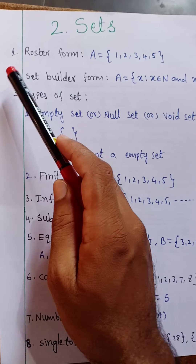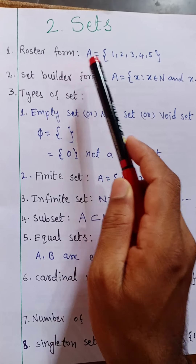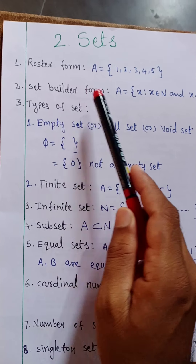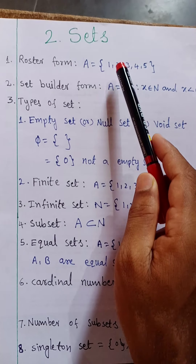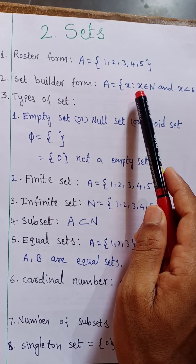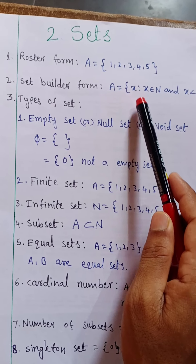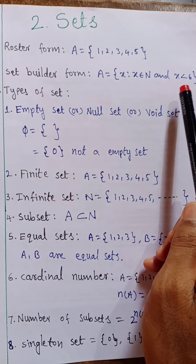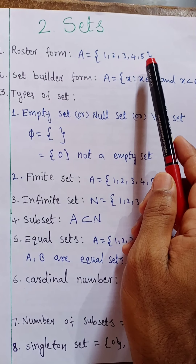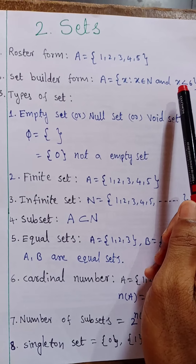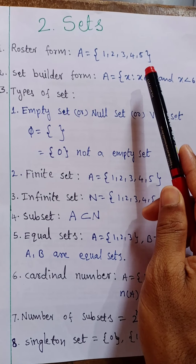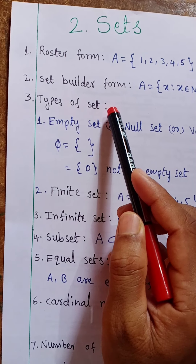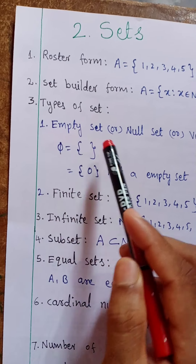Second chapter, sets. First one: roster form. A equal to {1, 2, 3, 4, 5} — this is tabular form. Converting into set builder form: A equal to {x such that x belonging to N and x less than 6}. Below 6 only, so x less than 6. We can also write x less than or equal to 5. This is called set builder form.